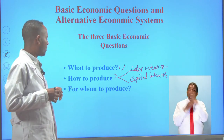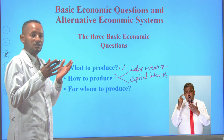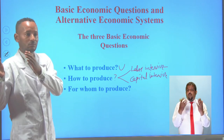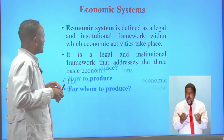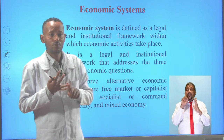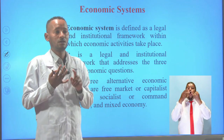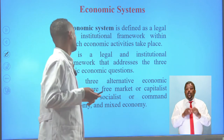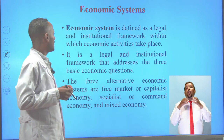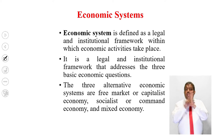The third basic economic question is for whom to produce. Shall we produce for the miners or the majority, for the poor or the rich? Now, the three basic economic questions — what to produce, how to produce, and for whom to produce — are addressed by three alternative economic systems called capitalist economy, command economy, and mixed economy.